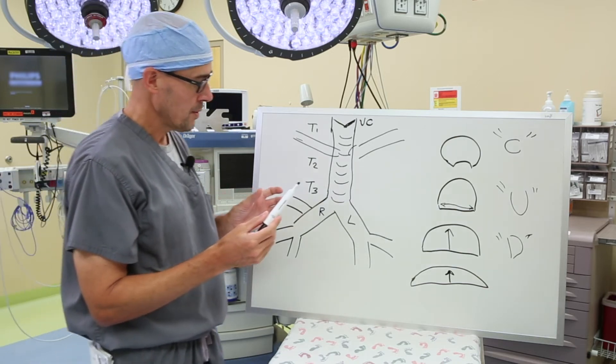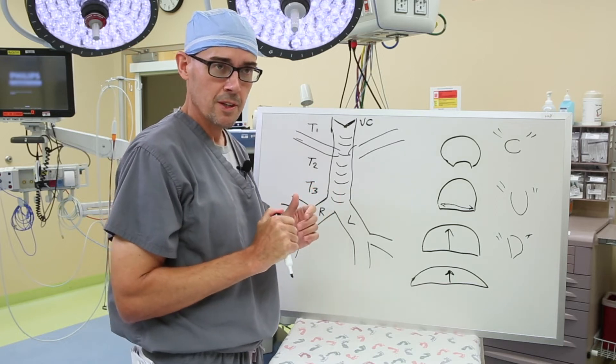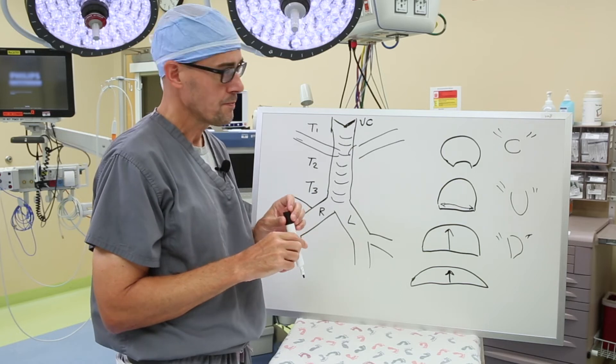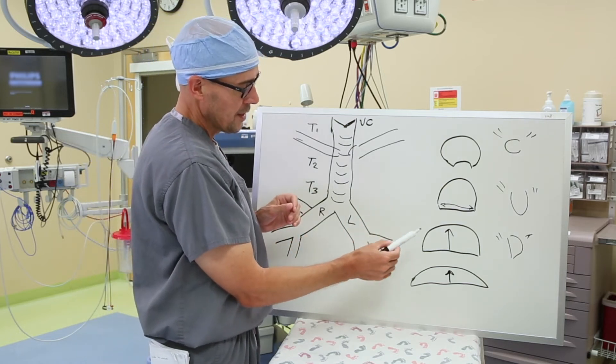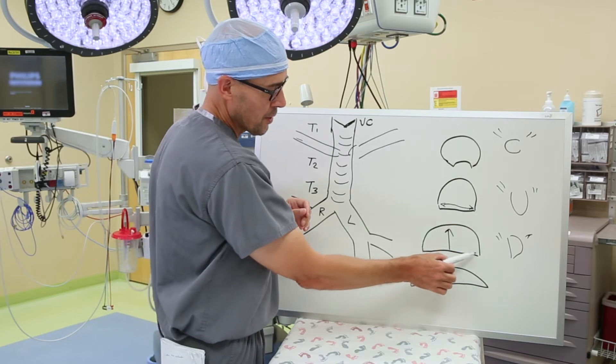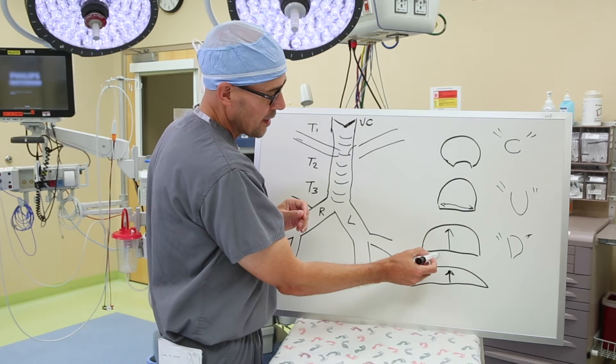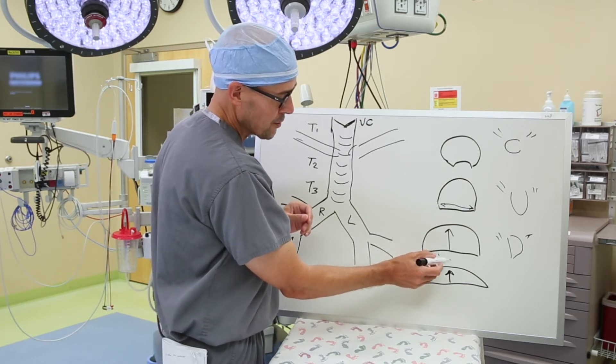The most common option that we use that is most effective for most types of tracheomalacia is called a posterior tracheopexy. And with that operation, you're taking this soft part of the trachea, the membranous trachea, and we pull it back to the spine and sort of pin it there.